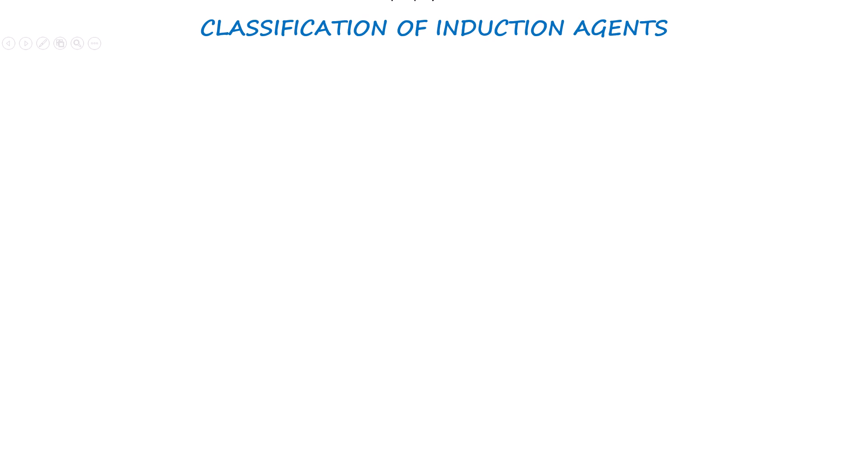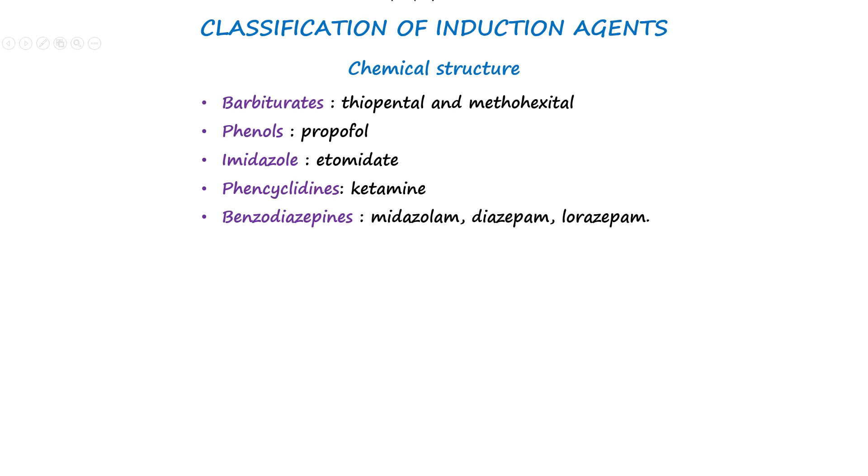Intravenous induction agents currently in use can be classified based on their chemical structure. These include barbiturates such as sodium thiopentone and methohexital, phenols like propofol, imidazoles such as etomidate, phencyclidines like ketamine, and benzodiazepines which include midazolam, diazepam, or lorazepam.